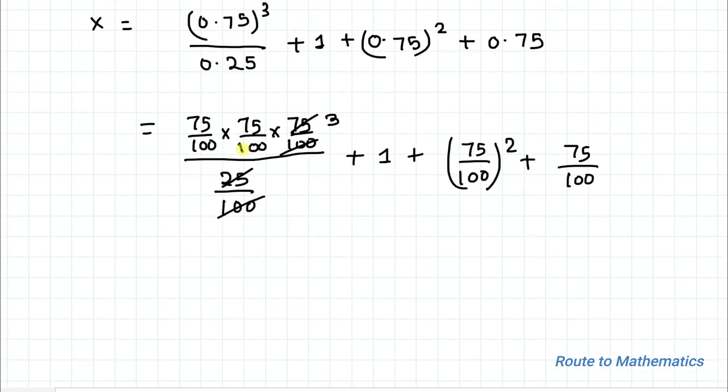Now here we have 3 of 75 by 100 square plus 1 plus 75 by 100 square plus 75 by 100. Here I will simplify this 75 by 100 square plus 75 by 100. If I divide 75 by 100, if I divide 75 with 25 we will get 3 and divide 100 with 25 we will get 4.